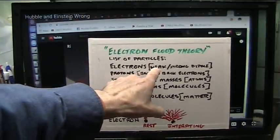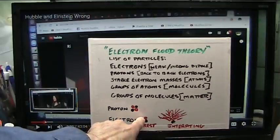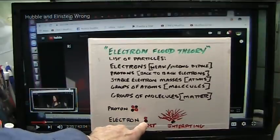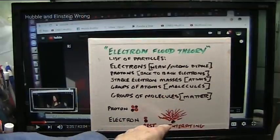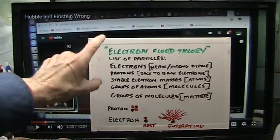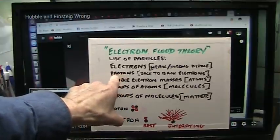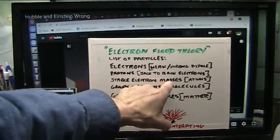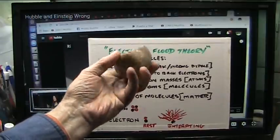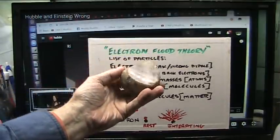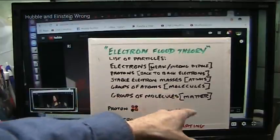Those are weak and strong dipoles. Here's an electron — it has a black spot and a white spot, a powerful spot. That's sitting at rest. When it concusses, the white explodes and the black just doesn't do anything — it's like a carrier. You glue electrons together and you end up with protons, back-to-back electrons. The stable electron masses become atoms. When you take a bunch of things and put them together and they don't fall apart and they don't decay, they're atoms and they're molecules. Groups of molecules is matter.